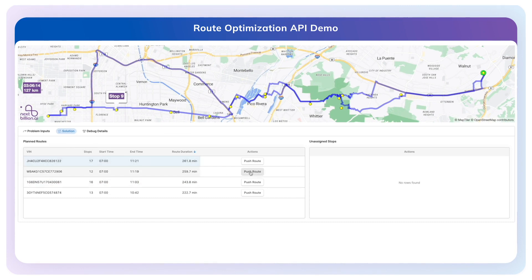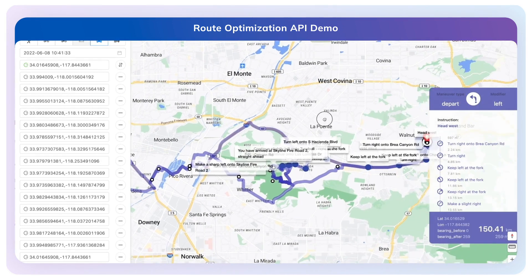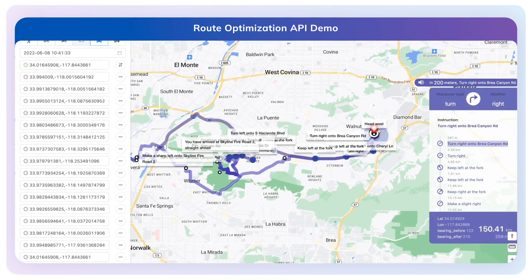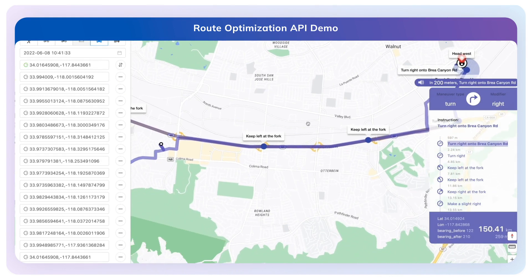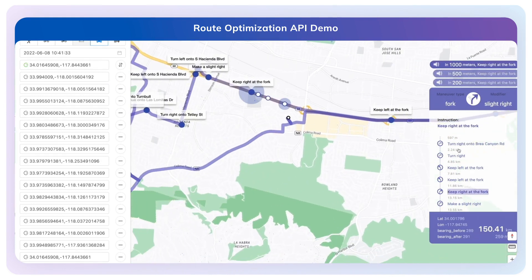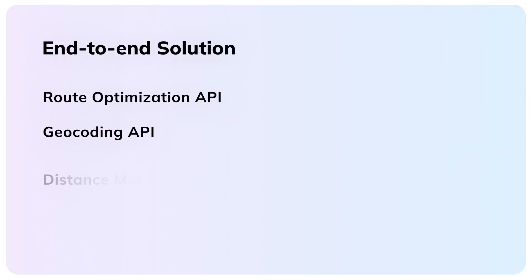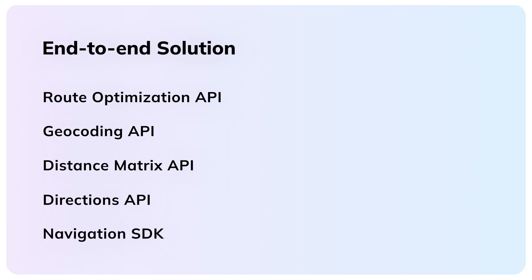Here, this is a representation of what NextBillion's Navigation SDK would receive — the turn-by-turn directions to the first stop, presented to the driver in some form of a driver application.